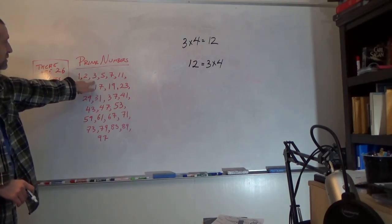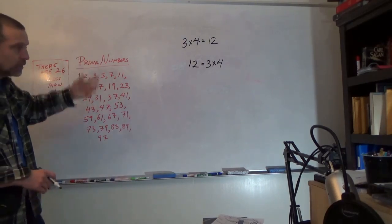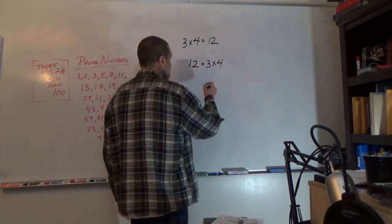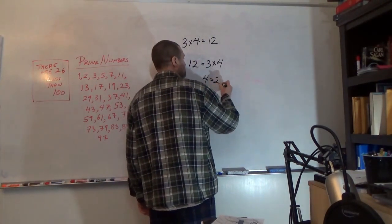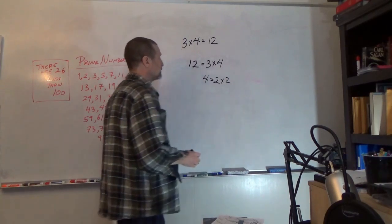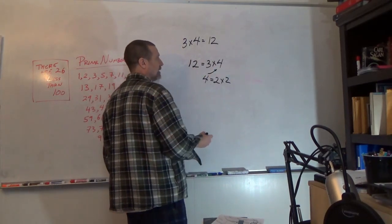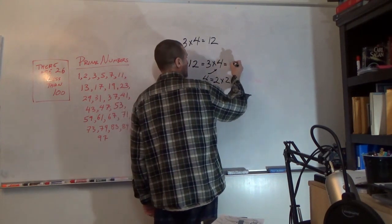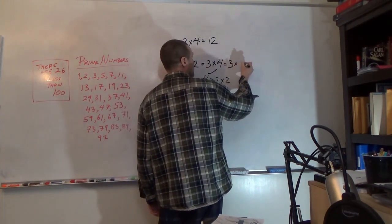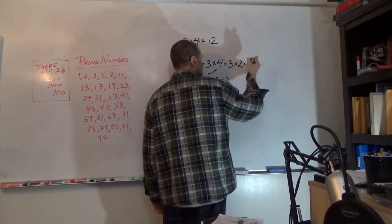And 3 is a prime number, but 4 is not. What do we know about 4? Well, 4 is equal to 2 times 2. So we're going to substitute that into there, and we'll get 3 times 2 times 2.